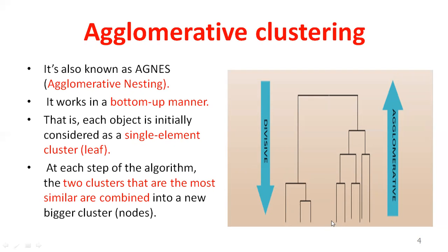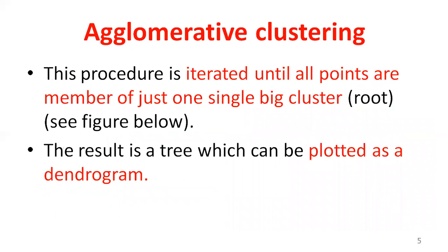In the agglomerative method, the right side shows the bottom leaf node. Each object is initially considered as a single element — for example, A is one cluster, B is another cluster, C is another cluster. At each step of this algorithm, two clusters that are most similar are merged into a new bigger cluster. That's why it is called the bottom-up approach: from the bottom, you will finally form one big cluster. This procedure is iterated until all points belong to a single cluster.